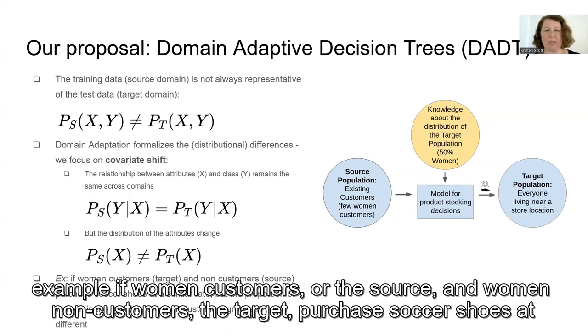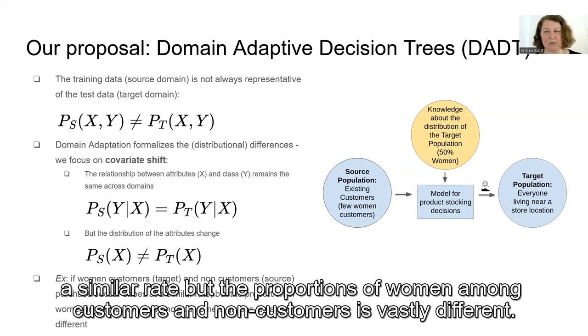For example, women customers — the source — and women non-customers — the target — purchase soccer shoes at a similar rate, but the proportions of women among customers and non-customers is vastly different.